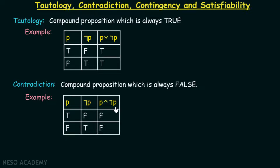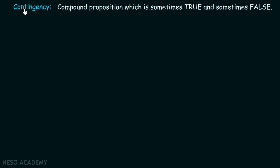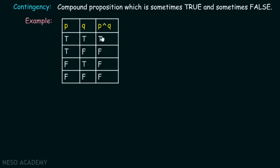Contingency is a compound proposition which is sometimes true and sometimes false. For example, taking two propositions p and q, the compound proposition p AND q has truth values true, false, false, false. It is sometimes true and sometimes false, as we can clearly see from this truth table. Hence, this compound proposition is a contingency.